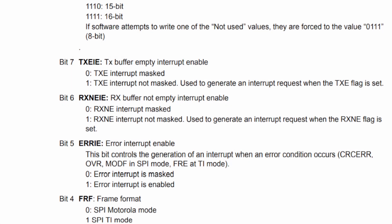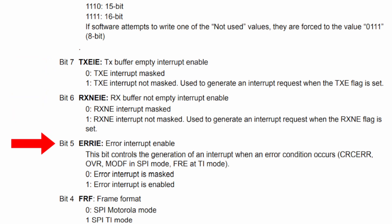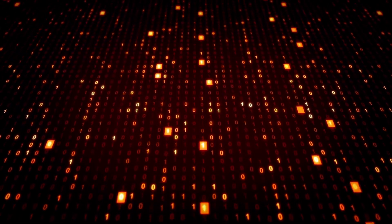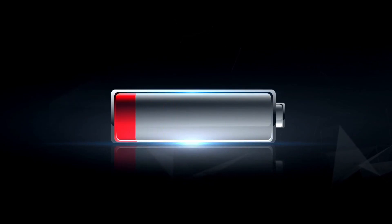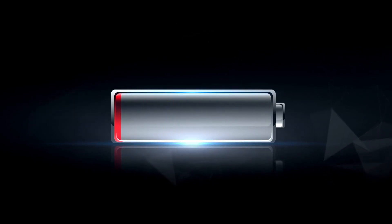The STM32 can be set to generate three types of SPI interrupts: the transmit buffer interrupt, the receive buffer interrupt, and the error interrupt. They are easy to set up and really come in handy when the need arises to write code that is non-blocking, or the system is battery-powered and power consumption must be taken into account.